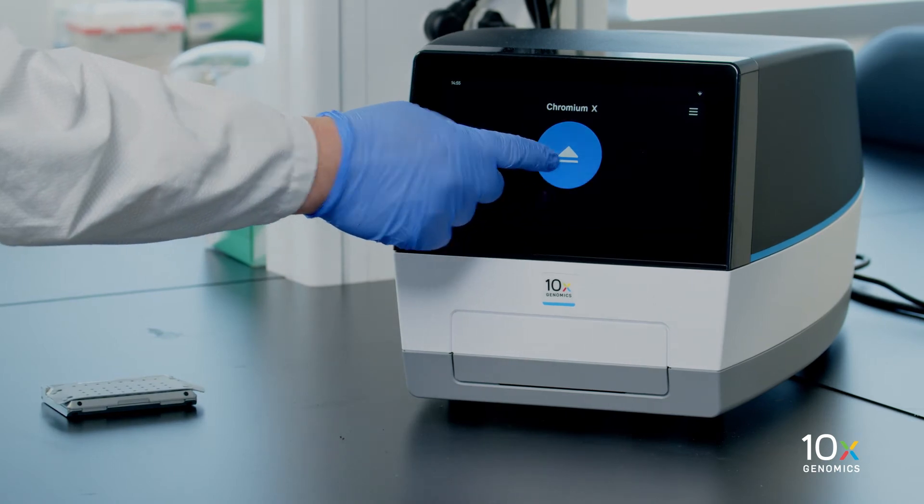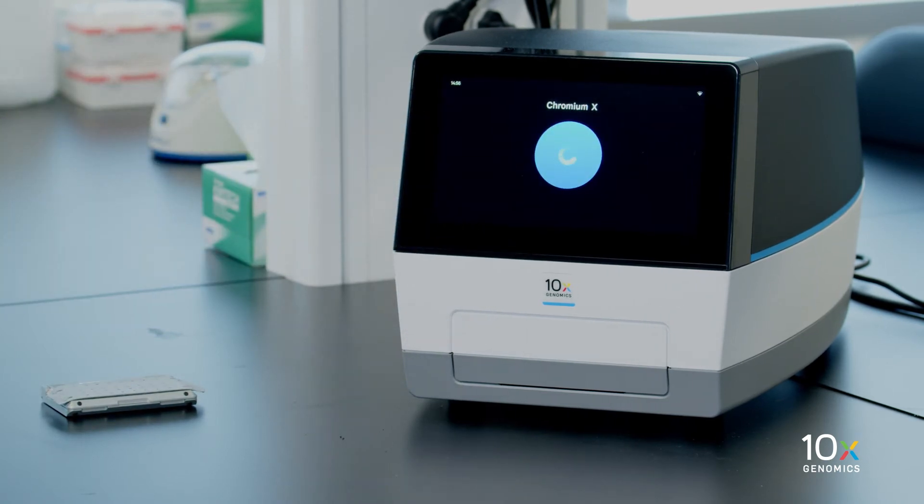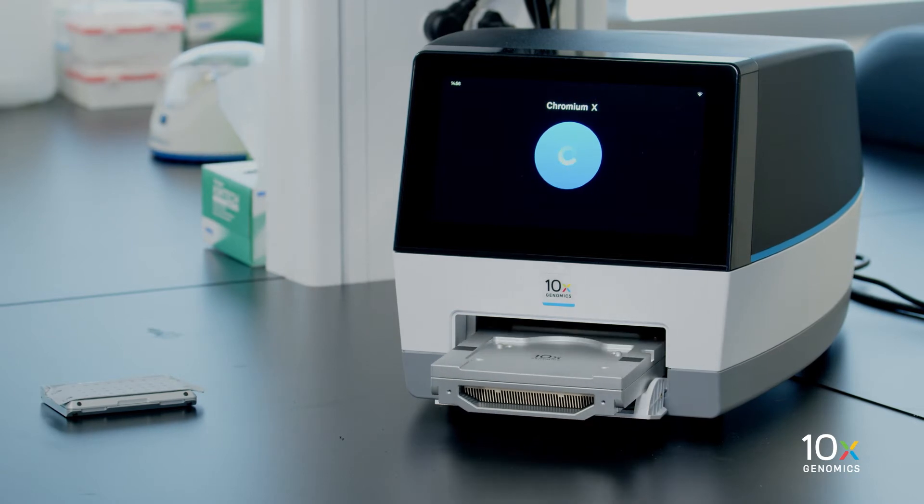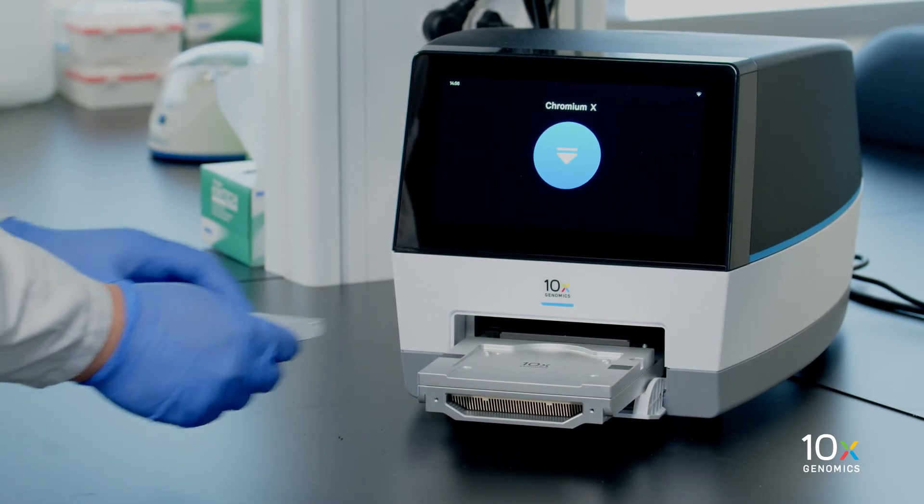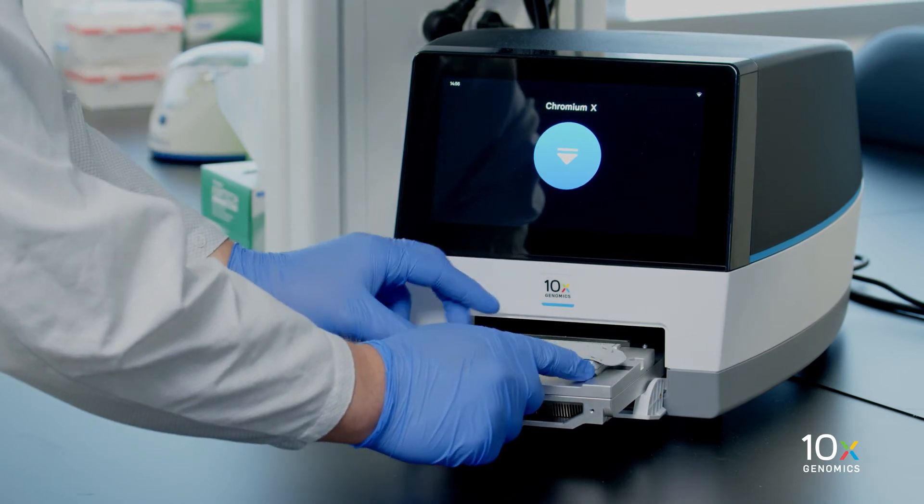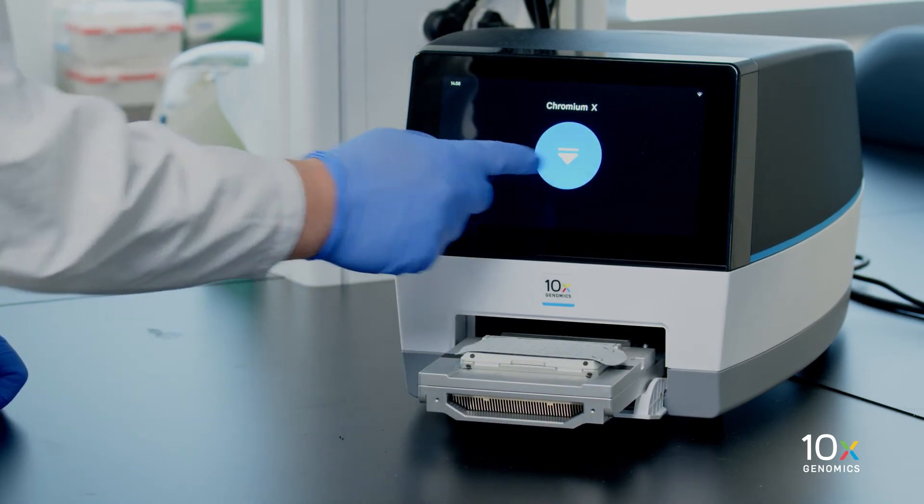Press the eject button to eject the tray. Place the assembled chip with the gasket in the tray, ensuring that the chip stays horizontal. Press the button to retract the tray.